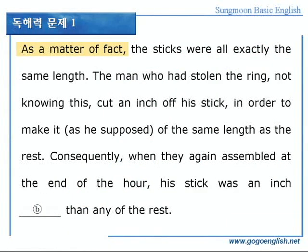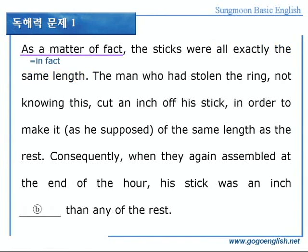다음, as a matter of fact, 사실은, the sticks, 그 막대기들은, were all exactly, 모두 정확히 the same length, 길이가 똑같은 것입니다. 먼저, as a matter of fact는 동의어로, in fact, 사실은, 이란 의미죠? exactly는 exact, 정확한, 부사형으로, 정확히, 라는 의미가 됩니다.